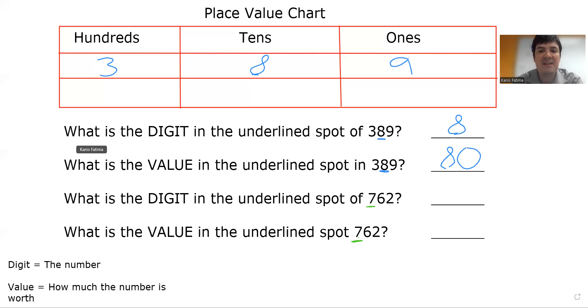Looking at my next number, 762, I write 7 in the 100 spot, 6 in the tens spot, and 2 in the 1 spot.